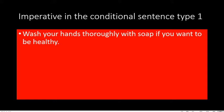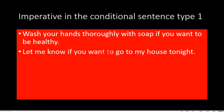For example: 'Wash your hands thoroughly with soap if you want to be healthy.' The imperative in this sentence is 'wash' — a verb that starts directly without a subject. Normally it is 'you wash,' but the subject is dropped. This is the indication of an imperative sentence. In the if-conditional type 1: 'if you want to be healthy,' there is no past tense marker — it uses base verb or verb 1.